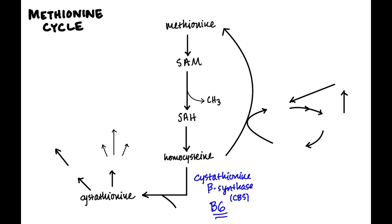We can also get rid of homocysteine going backwards — converting it back to methionine, which replenishes methionine. The enzyme that does this is called methionine synthase, and its cofactor is vitamin B12. This is why a B12 deficiency causes elevation of homocysteine, along with the elevation of methylmalonic acid discussed in the VOMIT pathway.